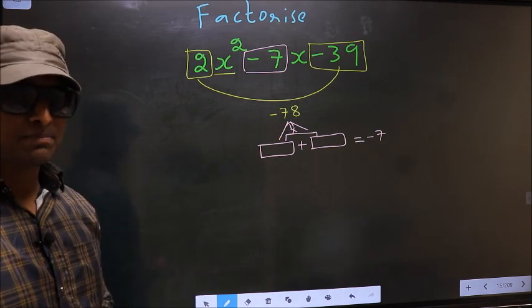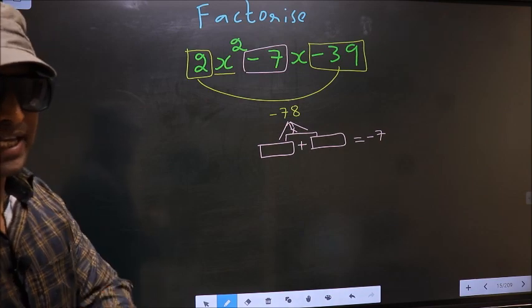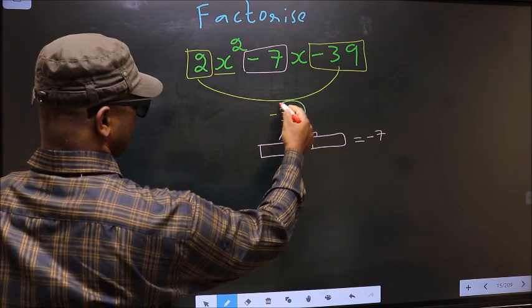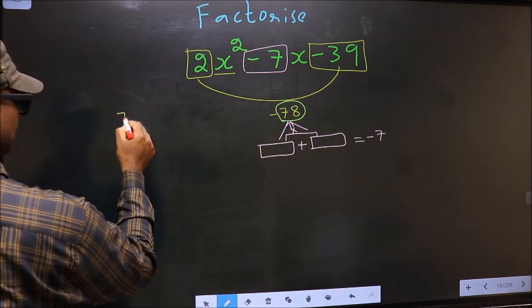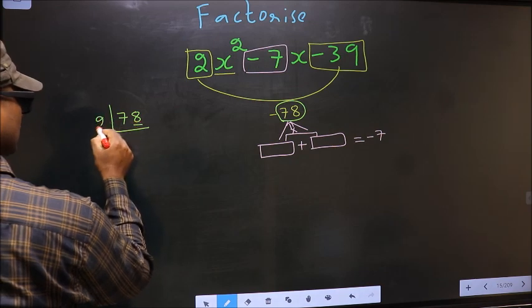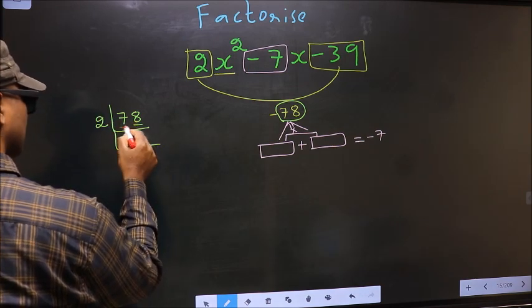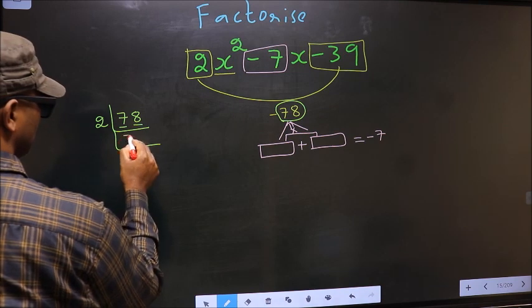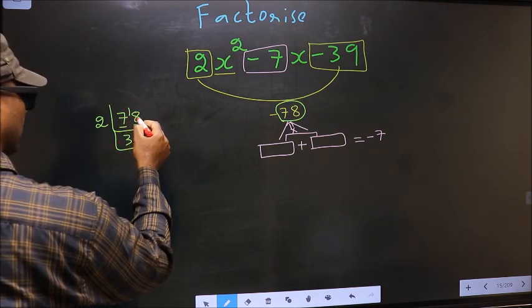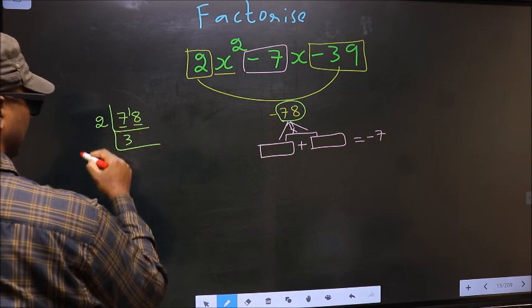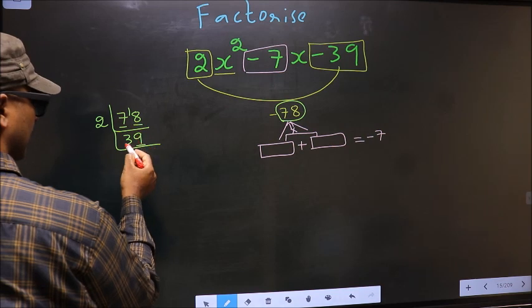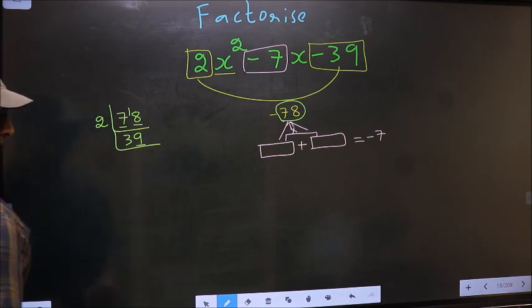To get those two numbers, we should take LCM of 78. So LCM I take here. The last digit 8 is even, so 2. The first number 7, a number close to 7 in 2 table is 2×3=6. 7-6=1, 1 carried forward making it 18. When do we get 18 in 2 table? 2×9=18. Now here last digit 9 is not even, so this number is not divisible by 2.